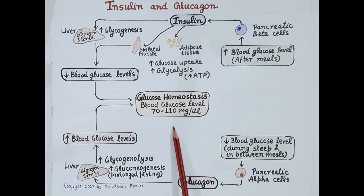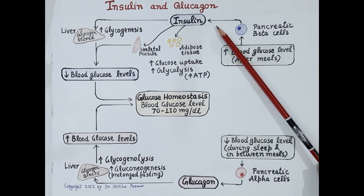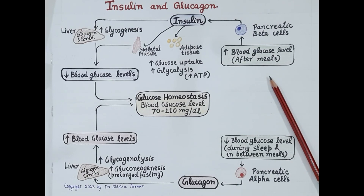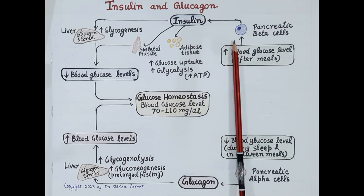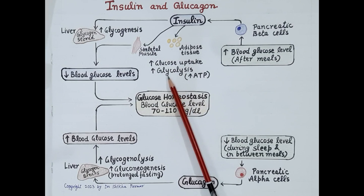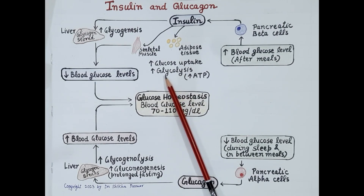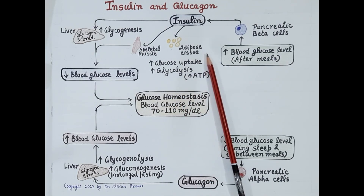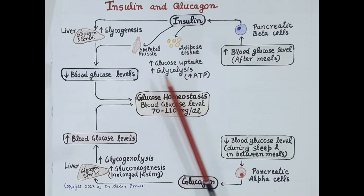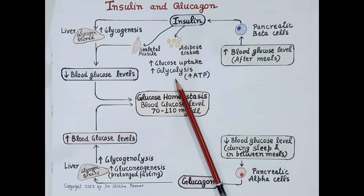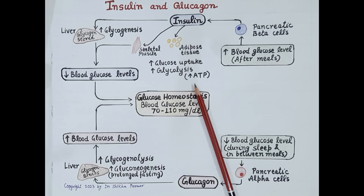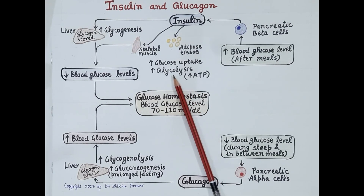This blood glucose level is achieved by the opposing but balanced actions of glucagon and insulin. After a meal, when blood glucose levels rise, insulin is released from pancreatic beta cells. Insulin enables increased uptake of glucose by the cells of the body, specifically adipose tissues and skeletal muscles. This glucose is utilized by the cells to produce energy or ATP by the process of glycolysis.